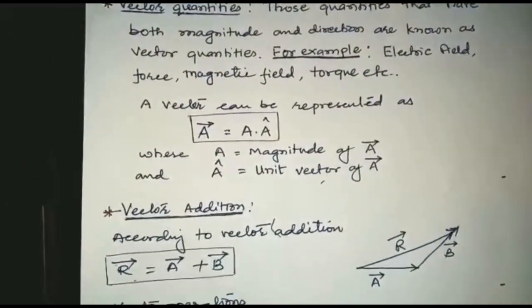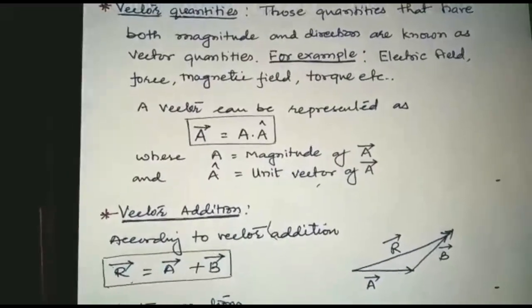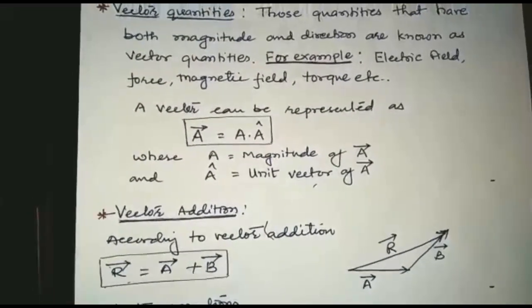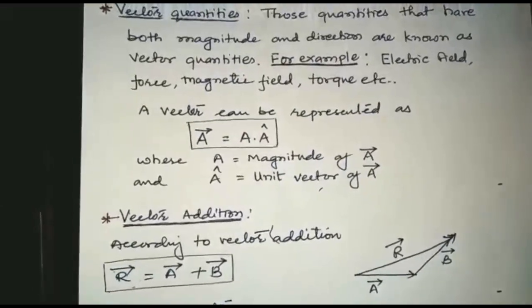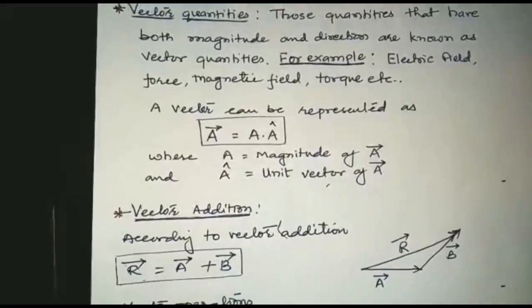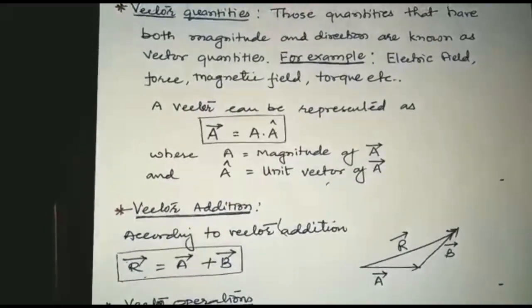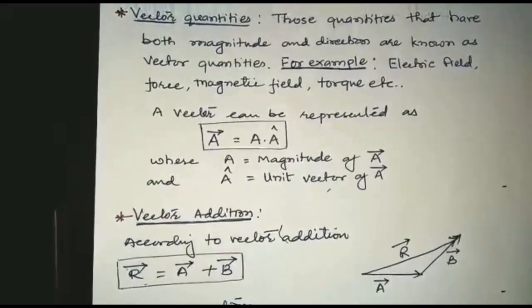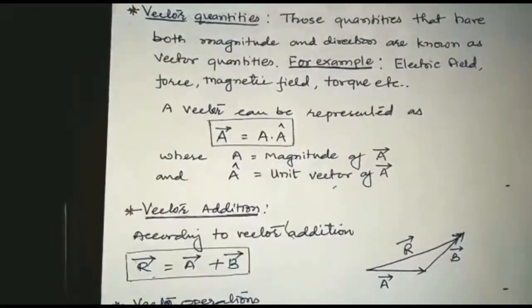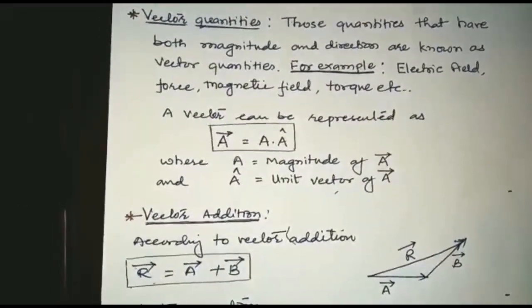Vector addition. Consider three vectors: vector A, vector B, and vector R. According to the diagram, vector R equals vector A plus vector B. The meaning of this equation is vector R is the resultant of vector A and vector B.